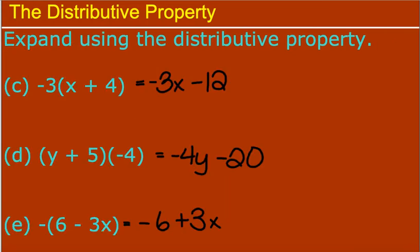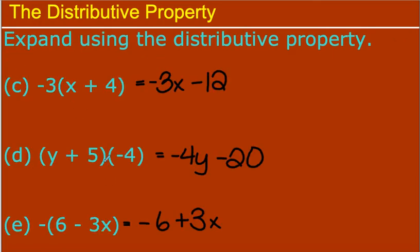You try C, D, and E. Press pause and then come back and check your answers. Okay, so if you checked: you distributed negative 3 to X and 4, getting negative 3X minus 12. If you got something wrong, fix it.